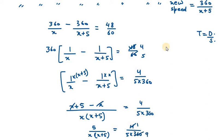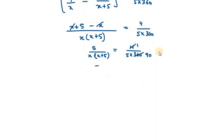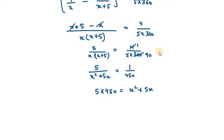We can reduce 4 and 360 — 360 divided by 4 gives 90 — so the equation becomes 5 over x(x plus 5) equals 1 over 450. Rewriting the left side: 5 over (x squared plus 5x) equals 1 over 450. Using cross multiplication, 5 times 450 gives us x squared plus 5x.